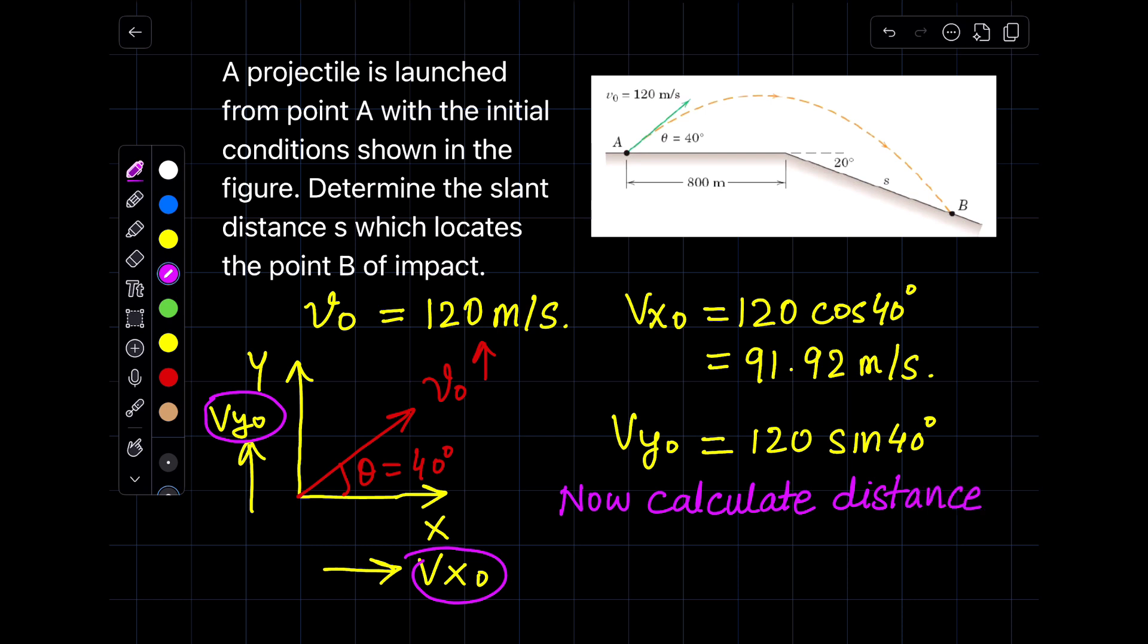Now when we see this diagram or the problem, we see that there is a slant distance which is not horizontal. So to make our problem easy, I will calculate the total distance, or generally you always write the final distance XF. To make it easier, I wrote XA-B, the distance from A to B.